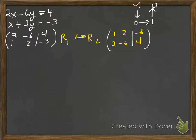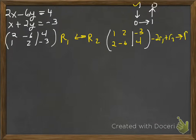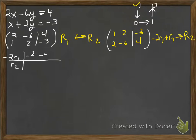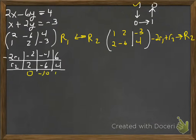Row 1, column 1 is now a 1. We'd like to make the entry below it a 0. To make a 0 in column 1, we use row 1 with the opposite of 2, which is negative 2. So negative 2 times row 1 plus row 2 replaces row 2. Negative 2 row 1 gives negative 2, negative 4, 6; adding row 2 (2, negative 6, 4) gives us our new row 2.